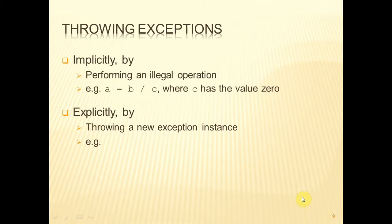Now, exceptions can be thrown, that is, occur, in two ways. This is implicitly by performing some kind of illegal operation, such as A equals B divided by C. There's nothing specifically illegal about that, unless, of course, C has the value zero, and then that causes problems.